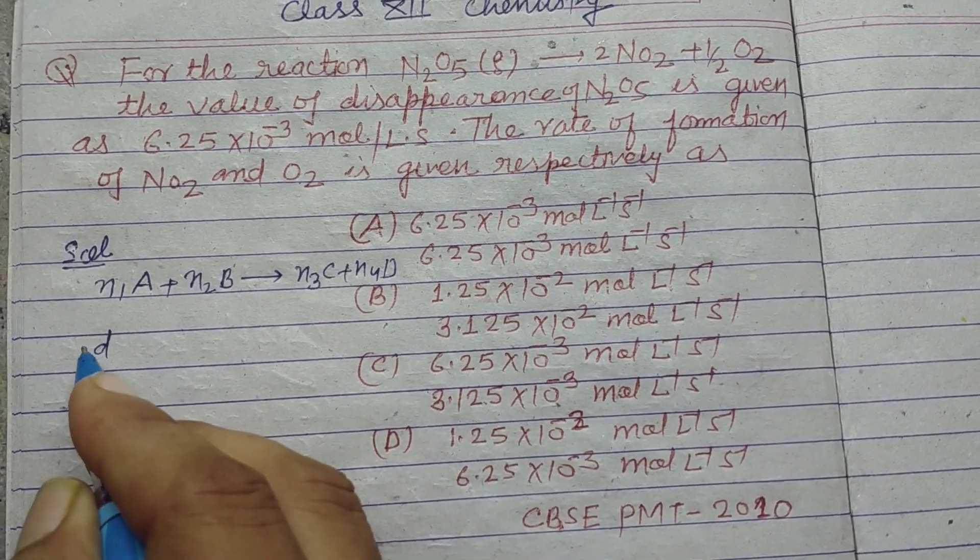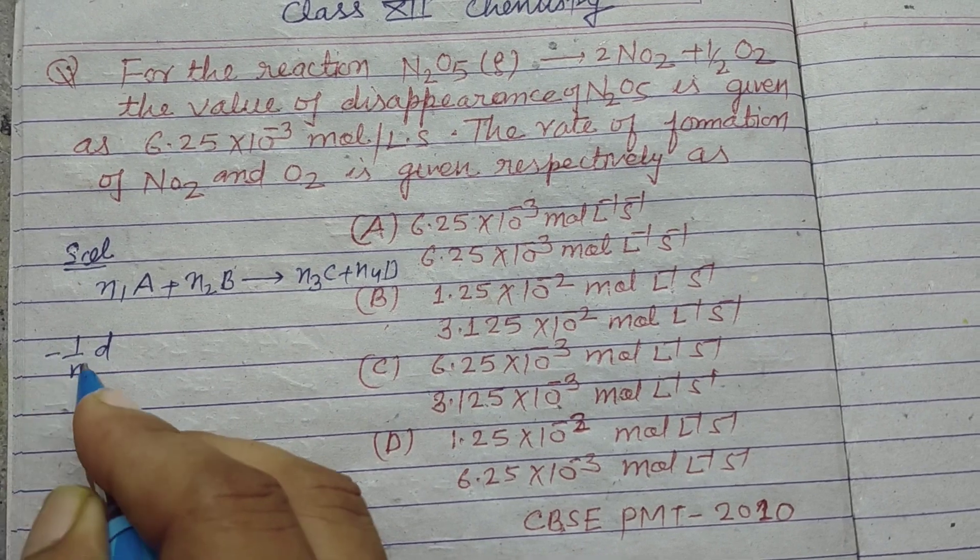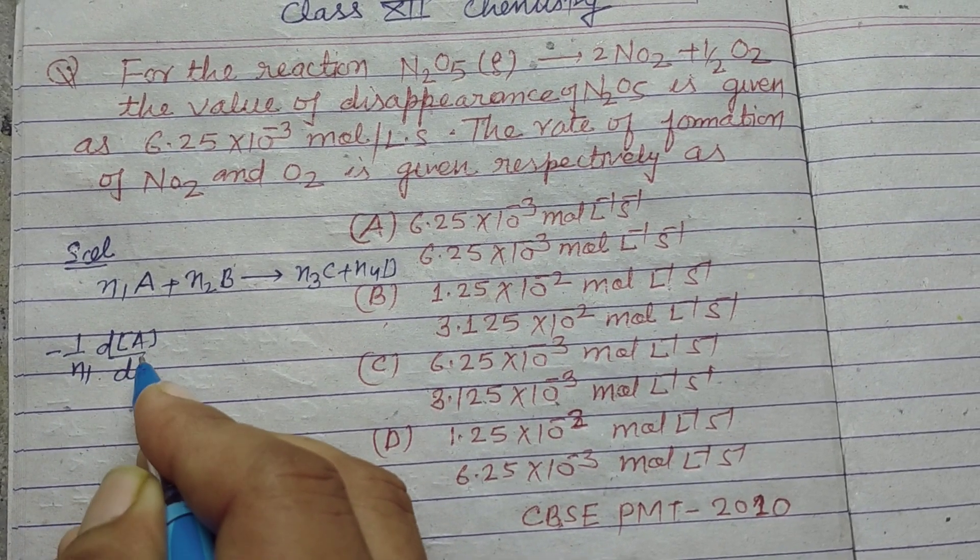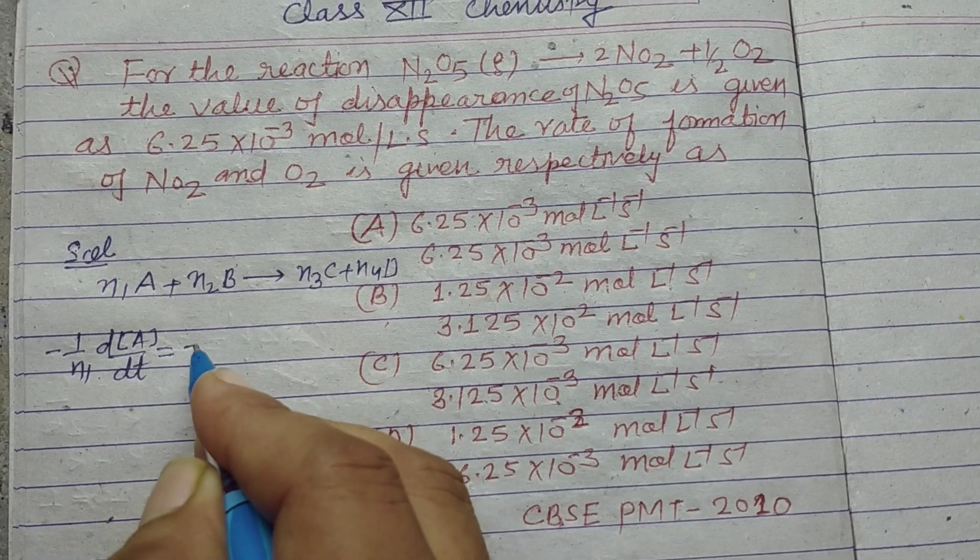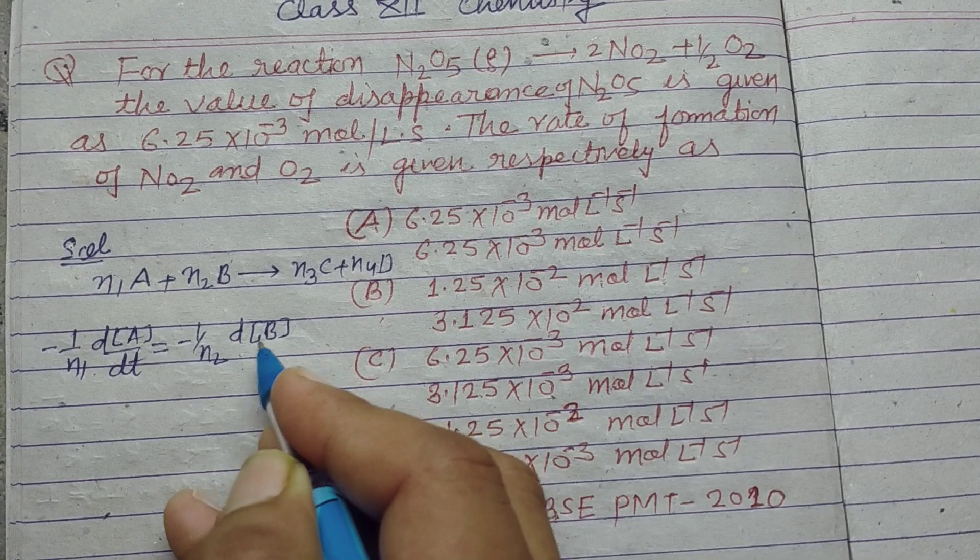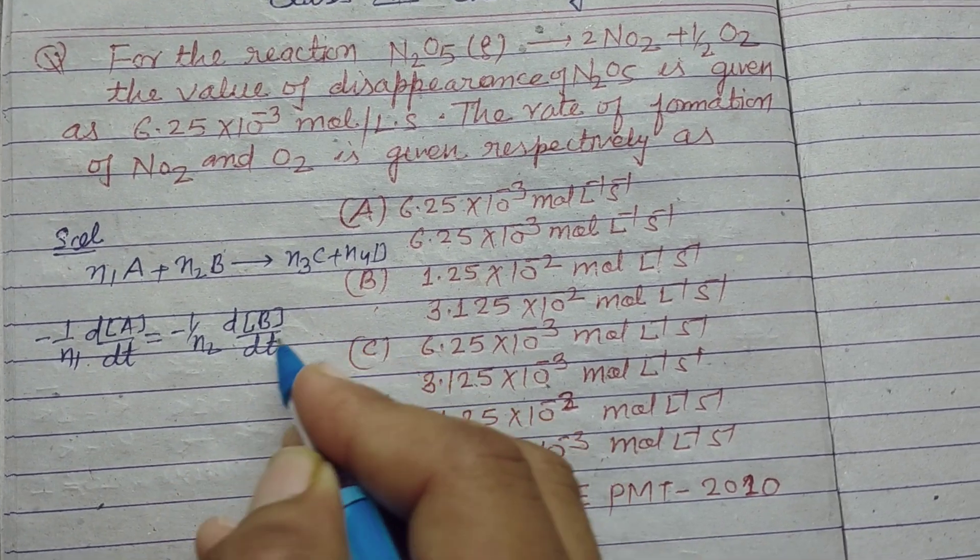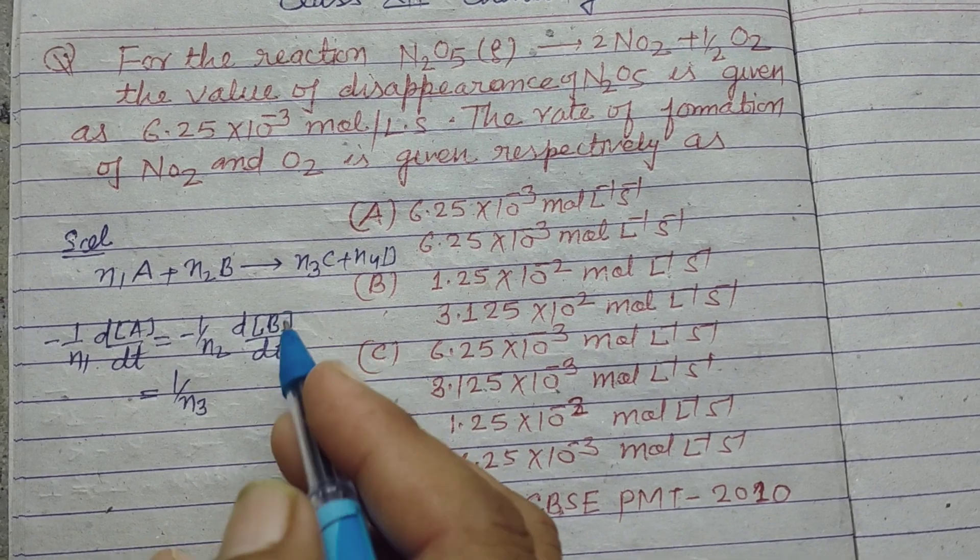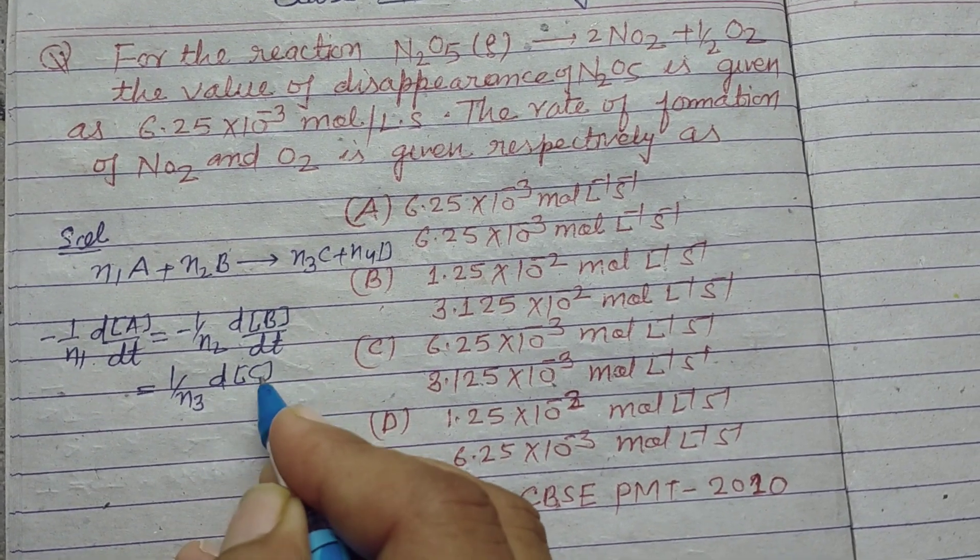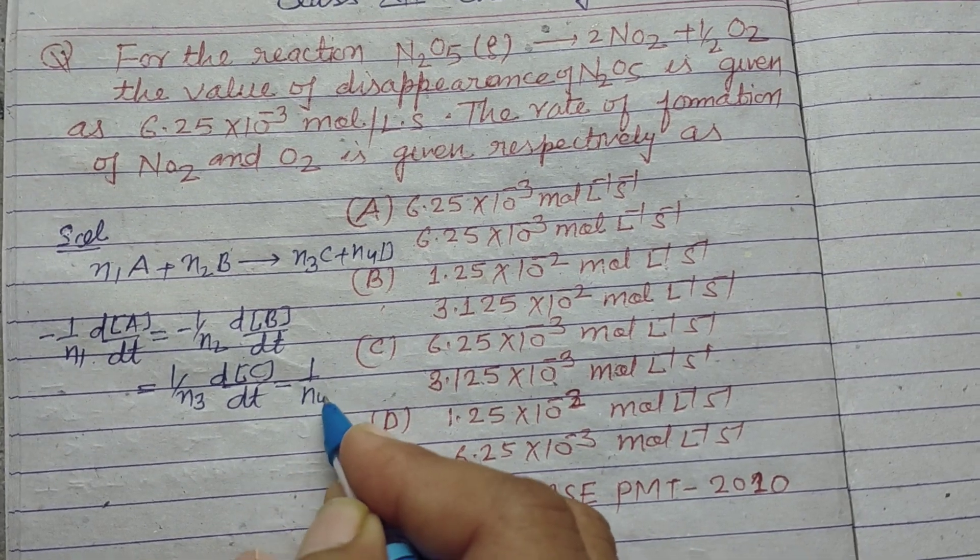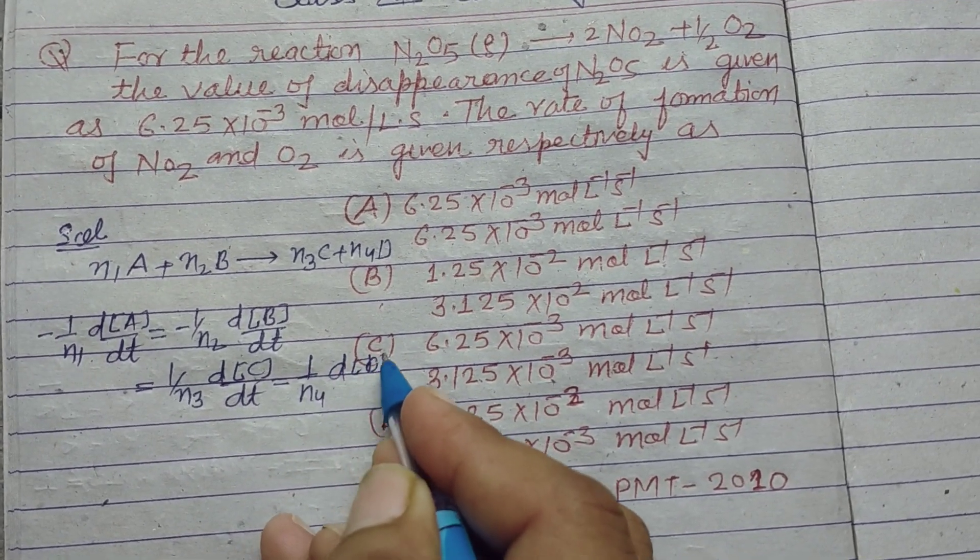So the rate of reaction is -1/n1 dA/dt = -1/n2 dB/dt = 1/n3 dC/dt = 1/n4 dD/dt.